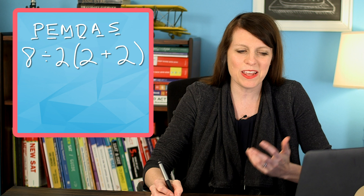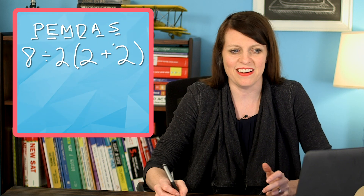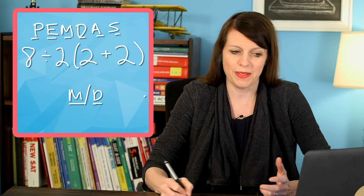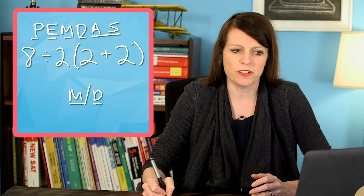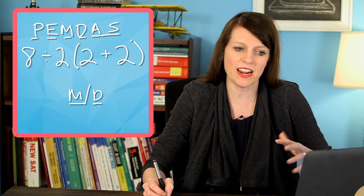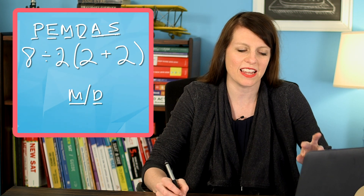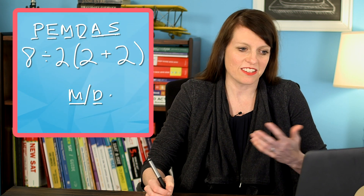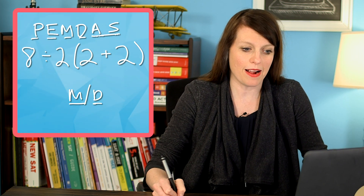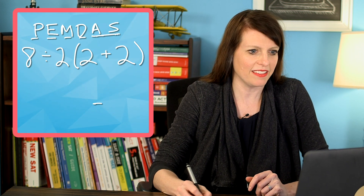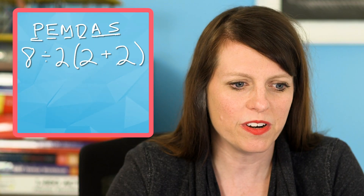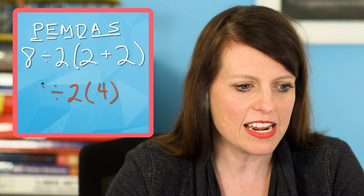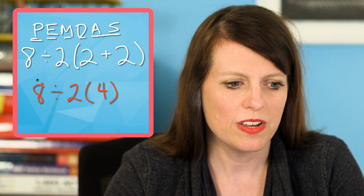What many of you might also know is that in PEMDAS, you do multiplication and division in either order from left to right, and you do addition and subtraction in either order from left to right. You can't switch positions. So in a problem like this, the first thing we do is 2 plus 2, which is 4. Then we have 8 divided by 2 times 4.